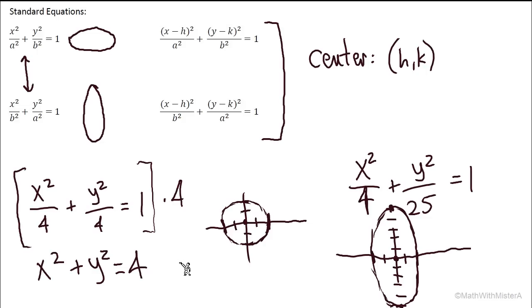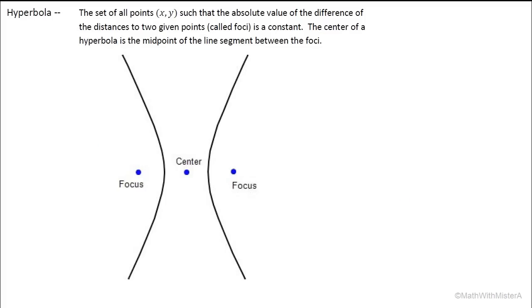Now let's cover the last conic section: the hyperbola. The hyperbola is defined as the set of all points such that the absolute value of the difference of the distances to two given points called foci is a constant. With the ellipse, the definition was a constant sum; with the hyperbola, the absolute value of the difference is constant. The shape is no longer closed — it's an open hyperbola with two branches.